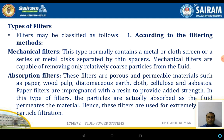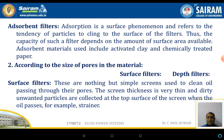Most of the filters we see in vehicles are paper filters. In high-end machines, mechanical filters — that is, metallic filters — are also used. Another type is absorbent filters. Absorbent filters operate on surface phenomena and refer to the tendency of particles to cling to the surface of the filter material.